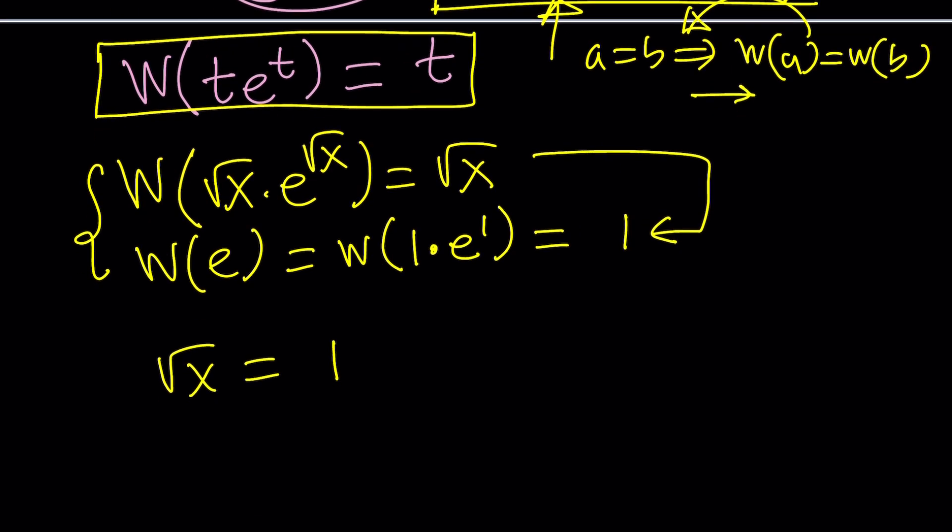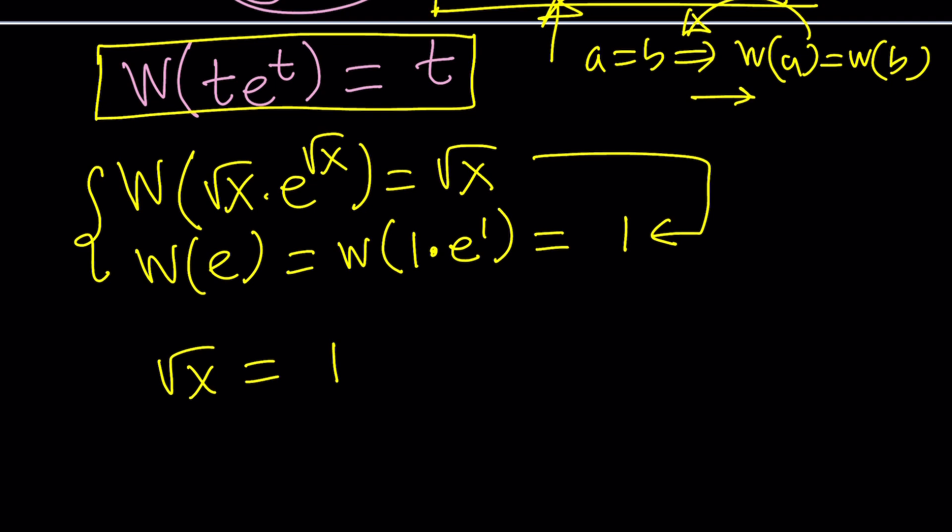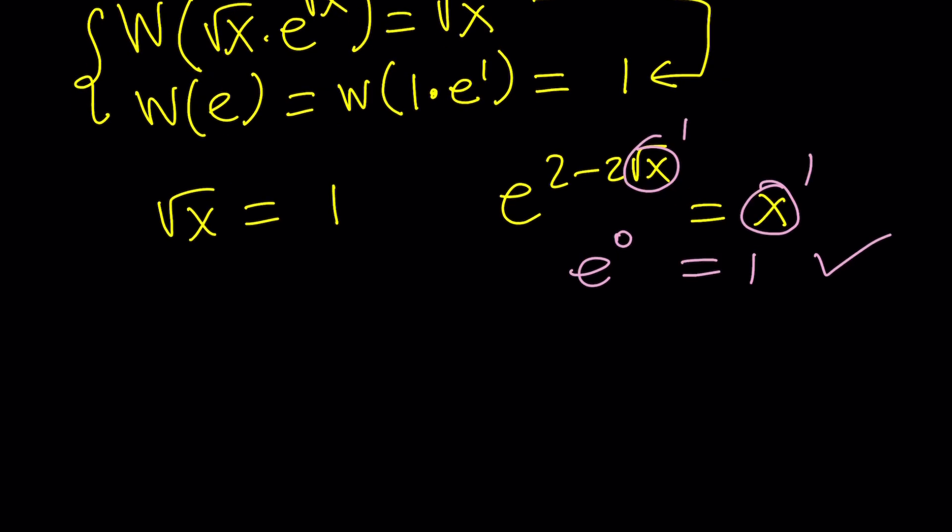So now we got the following equation obviously which is a lot simpler and you can definitely check this with the original problem because if square root of x is equal to one then x is equal to one and this is true because e to the power zero equals one. We got a solution. That works. So square root of x equals one implies that x is equal to one if you square both sides.